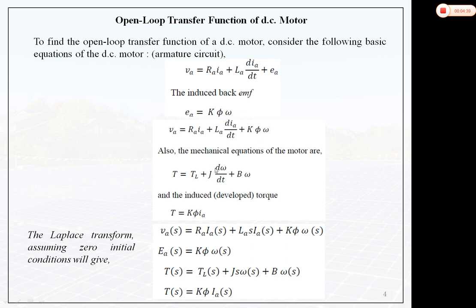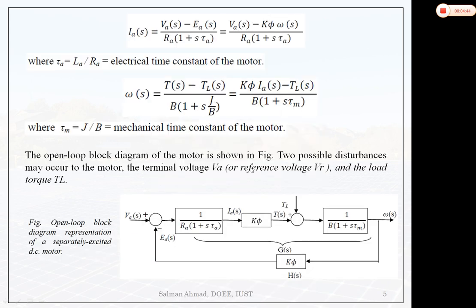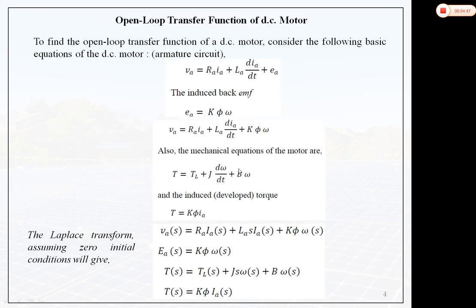We also know that motor torque equals load torque plus dynamic component plus viscous friction B·ω. Other friction components are very small in comparison to viscous friction, so we neglect those. The induced motor torque is proportional to flux times armature current: T = K·φ·ia.